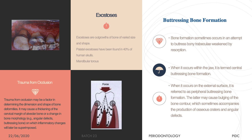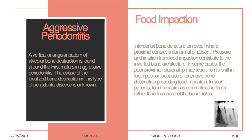Trauma from occlusion is another form of morphological change — it can change bone morphology, most often increasing the thickness of the alveolar plate and rounding it, which results in more food accumulation. Food impaction is another way to change bone morphology; interdental bone defects often occur when proximal contact is abnormal or absent. The pressure and irritation from food impaction can result in bone loss creating an inverted architecture or a crater formation in the interdental region.